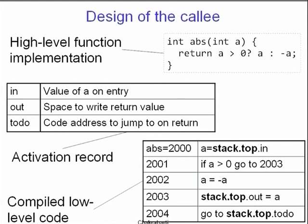What goes into this activation record? In case of the absolute function, which takes an integer by value and returns another integer, the activation record has three fields: 'in' for the input value, 'out' for the output value back to the caller, and the return address — the code address to jump to when the return happens. The code for abs starts at address 2000, copies stack.top.in into register A, and if A is already positive it skips the negation step.